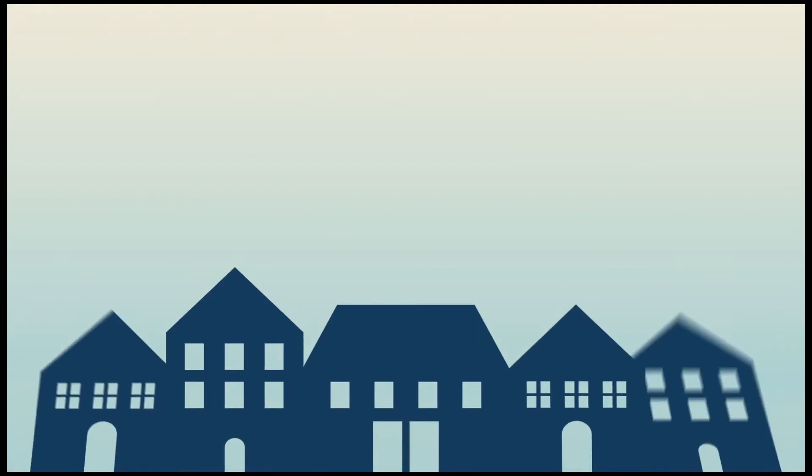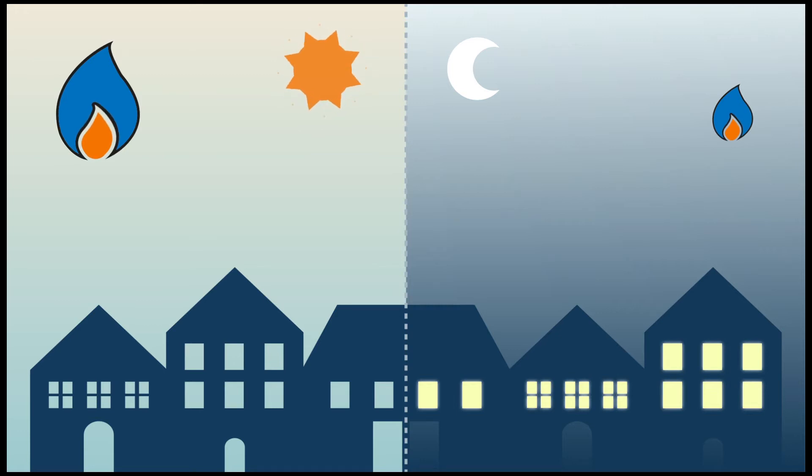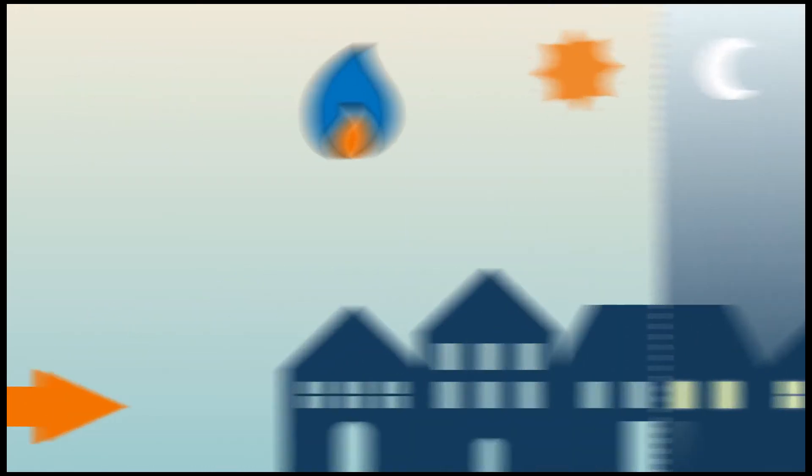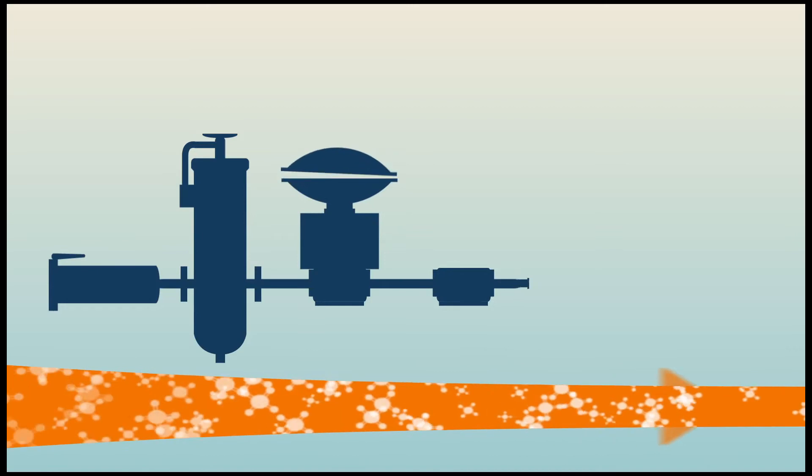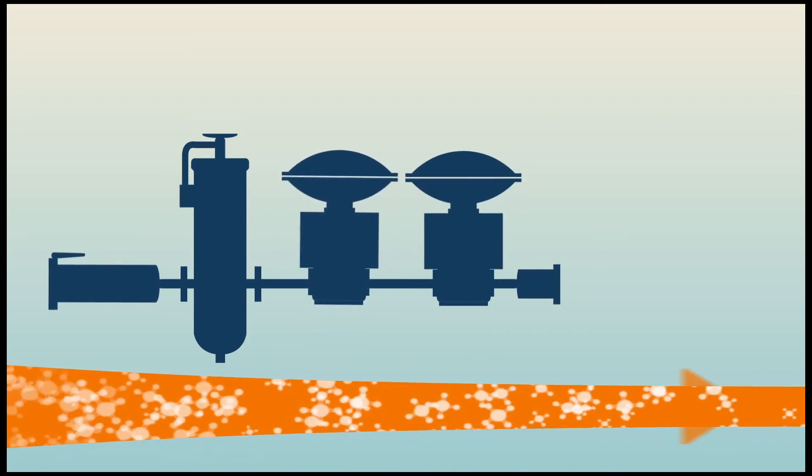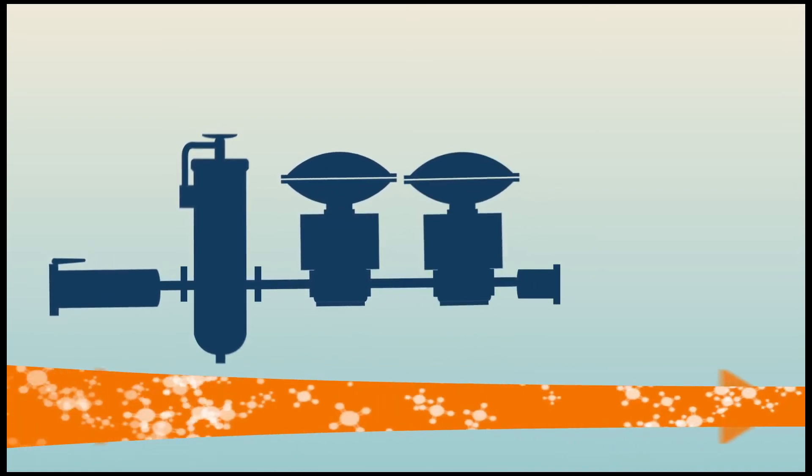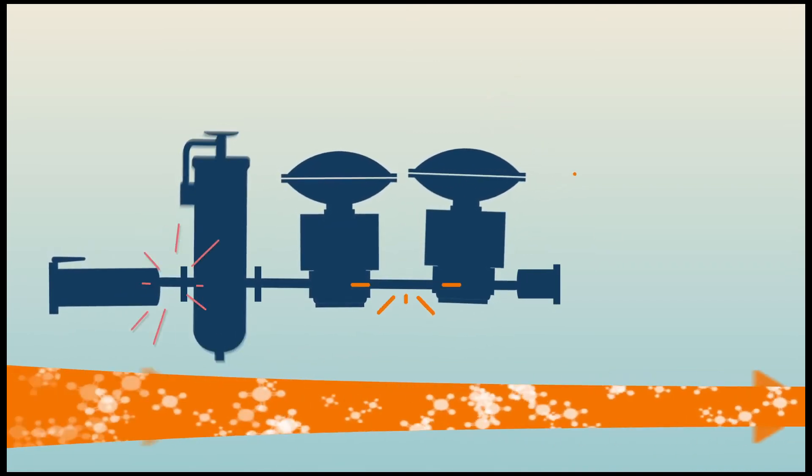The demand for gas varies continuously during the same day and also throughout the year, depending on consumer consumption. The existing gas network does not consider these variations and maintains the gas pressure constant. Therefore, it increases when gas consumption is low, thereby pressurizing the network pipeline and generating microleaks.